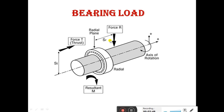We are going to discuss two types of loads in bearings: one is thrust load and another is radial load. The radial load acts perpendicular to the axis, and the thrust load acts along the axis. These two forces we are going to discuss while solving problems. The bearing is used to rotate the object.